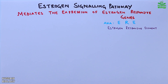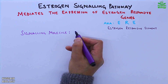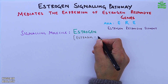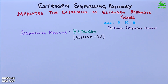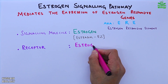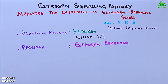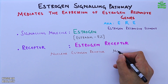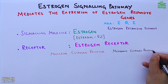In this pathway, the signaling molecule is the estrogen molecule — for example, estradiol. For this signaling molecule or ligand, we have the receptor, the estrogen receptor, which is of two types: nuclear estrogen receptor and membrane estrogen receptor.